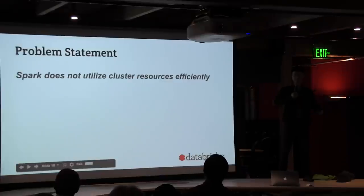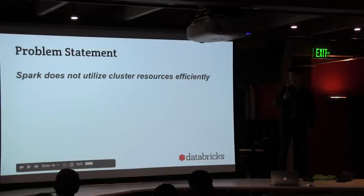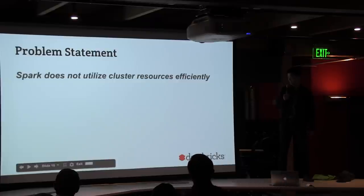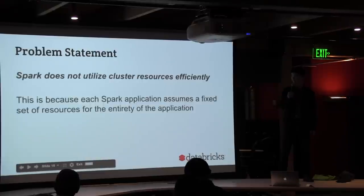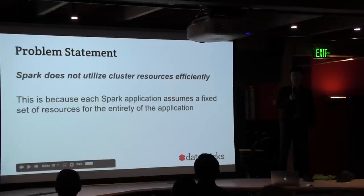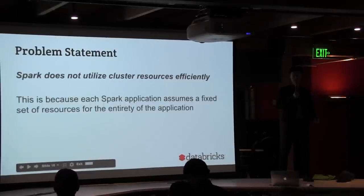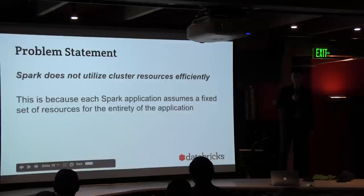Hopefully by now I've made it clear what the problem is. Here's a formalized statement: Spark doesn't currently utilize cluster resources super efficiently. This is largely because every application assumes that the set of resources it gets from the very beginning is statically allocated.